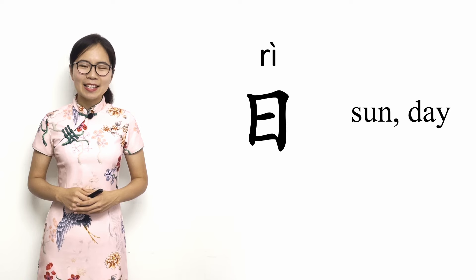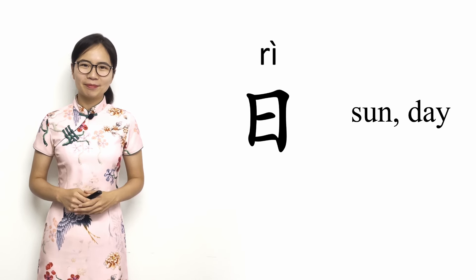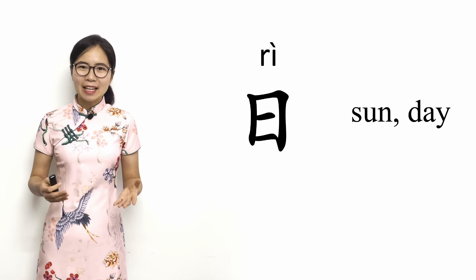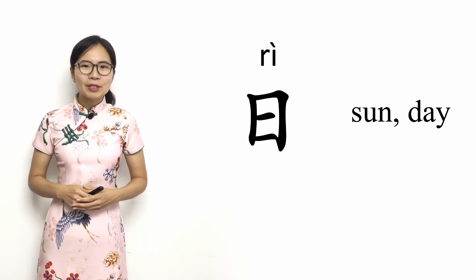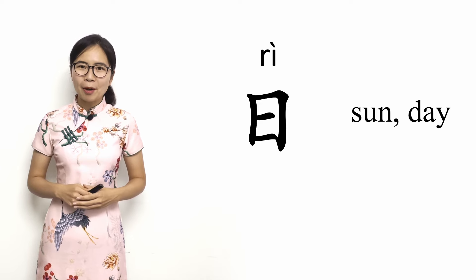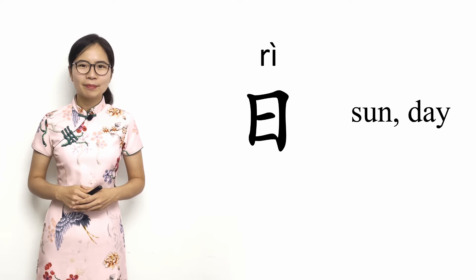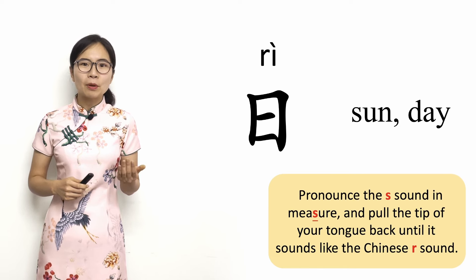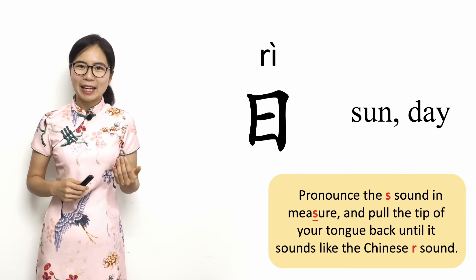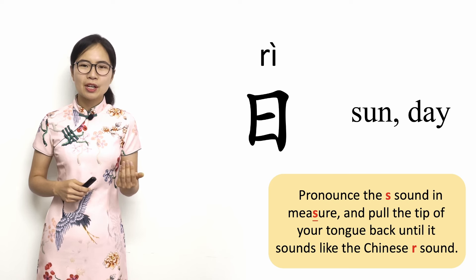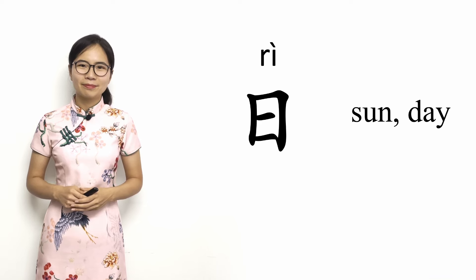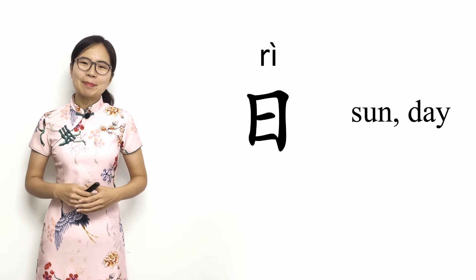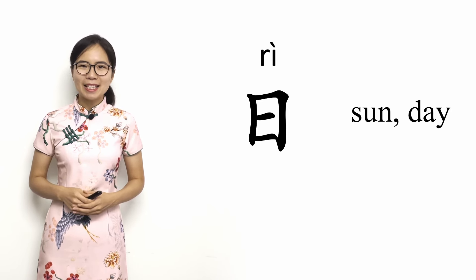Our first character in this lesson is 日. A lot of people have difficulty pronouncing this character. It's pronounced differently than the R sound in English. It's pronounced with your tongue pointing up towards the roof of your mouth and your teeth just slightly parted. You can practice this by pronouncing the S sound in the word 'measure' and pulling the tip of your tongue back until it starts to sound like the sound. I'll cover how to pronounce this in more detail in my Chinese pronunciation using pinyin lesson series. When the video is ready, I'll link it here.